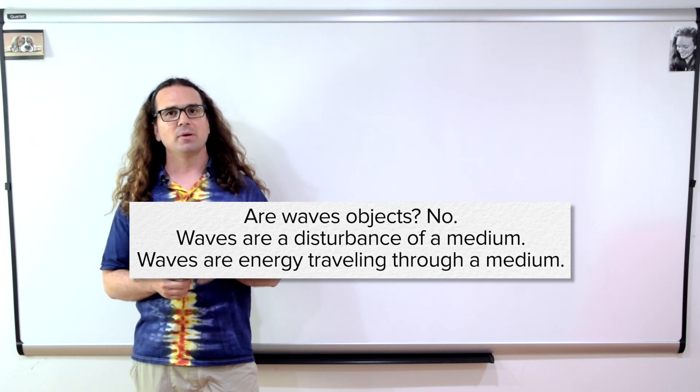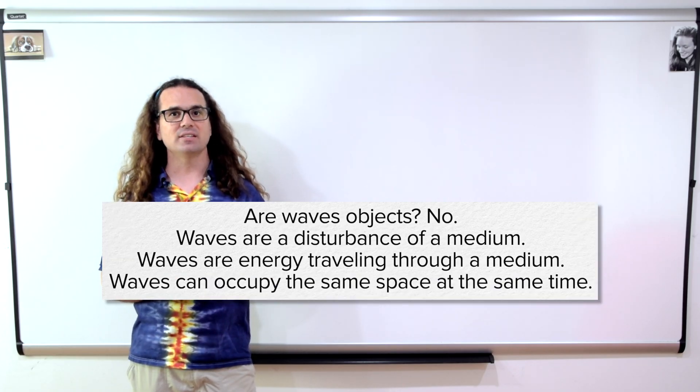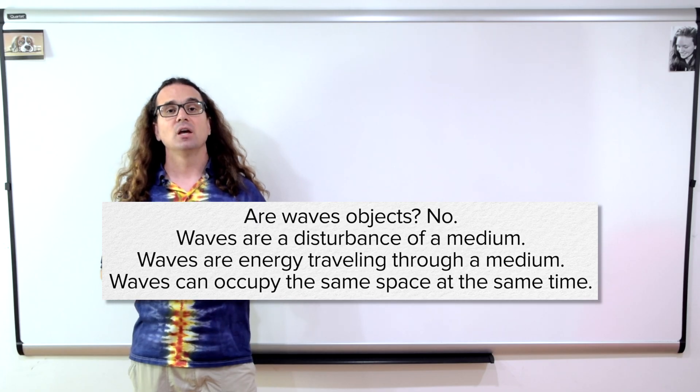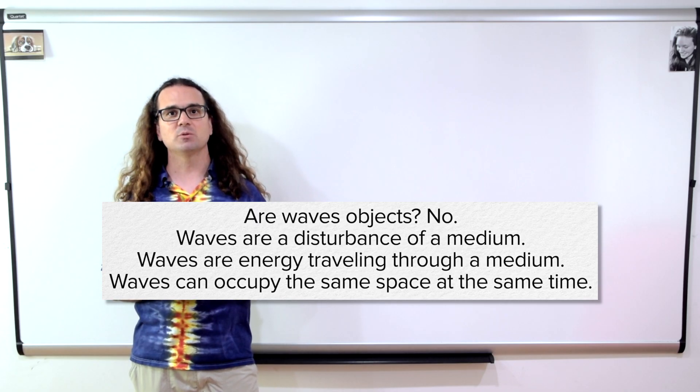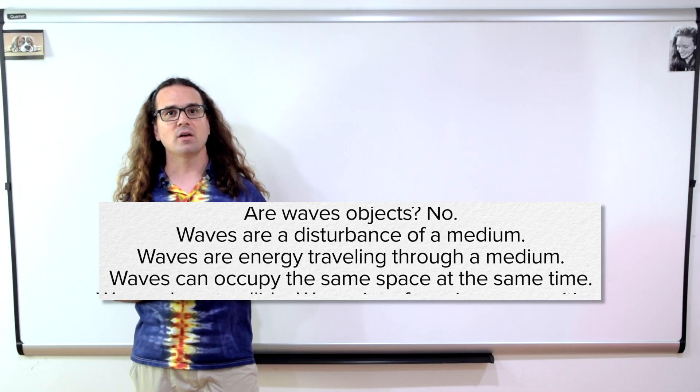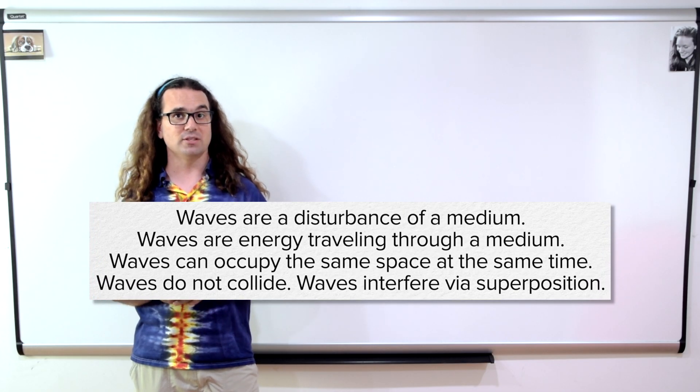In other words, because waves are not objects, they can occupy the same space at the same time. Which is why waves do not collide. Instead, when they occupy the same space, they interfere with one another via something called superposition.